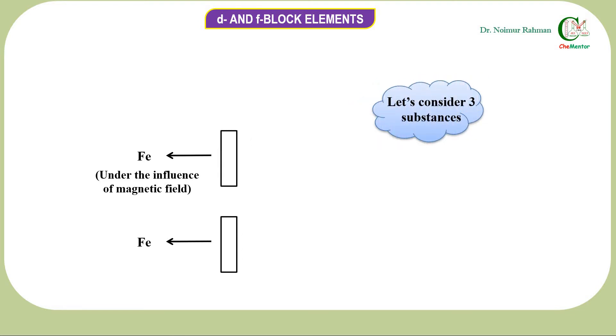Now consider three substances. We can observe in the first case, the first substance is getting attracted, the second substance is getting repelled, and the third substance is strongly attracted. In the second case, no attraction for the first two, but the third substance is getting attracted.